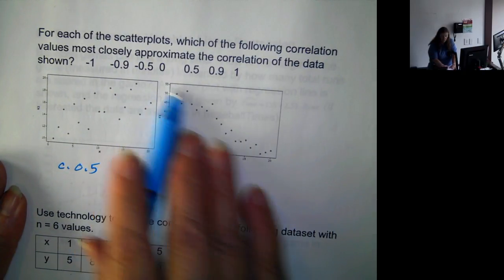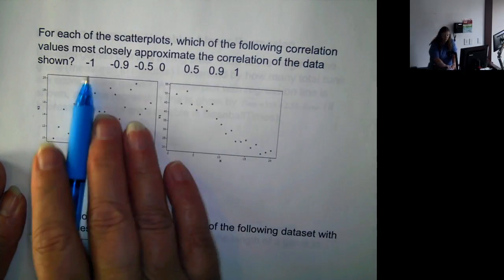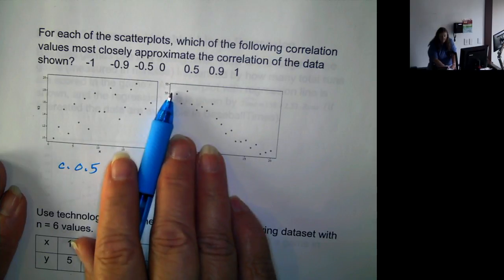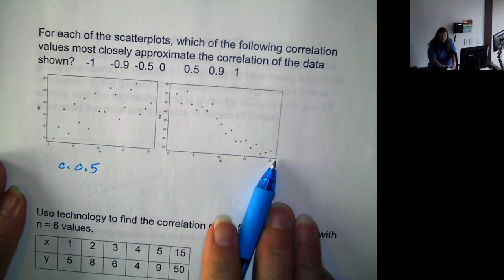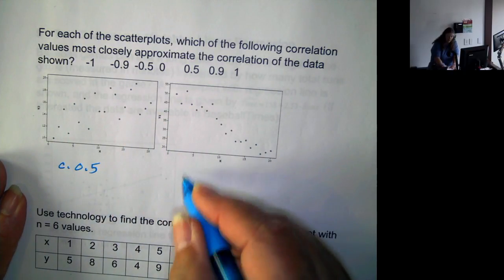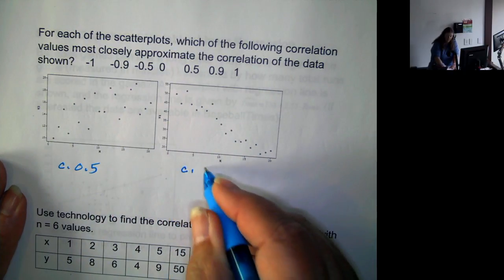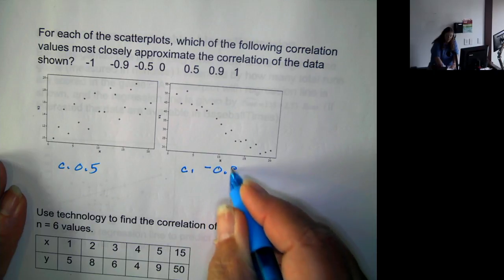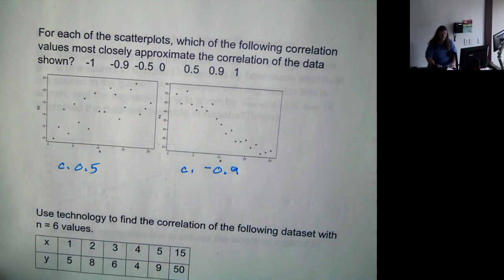Now, the second one, it's going down, so we're looking at the negatives. It's not exactly in a straight line, so it's not going to be negative 1, but it's pretty close to a straight line. So it's going to be approximately negative 0.9.